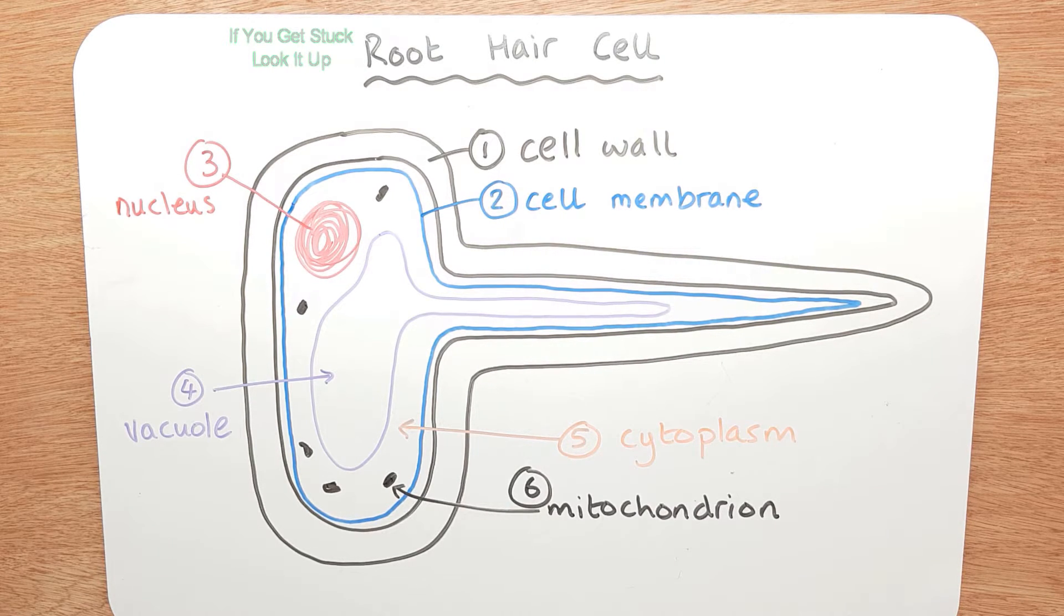Remember that there is no chloroplasts because it's underground and there's no sunlight reaching it, so there would be no advantage to have a chloroplast. And that is our root cell, the main structure.